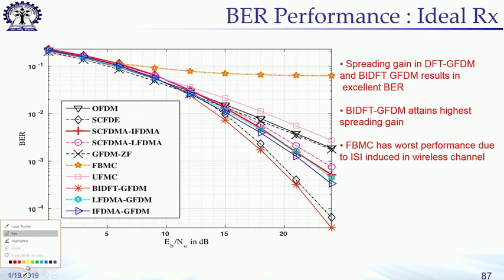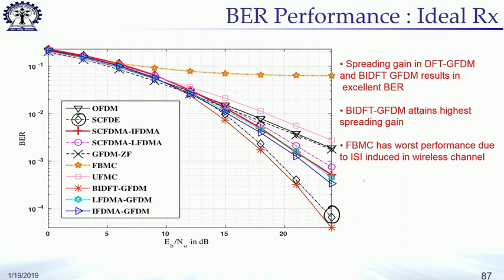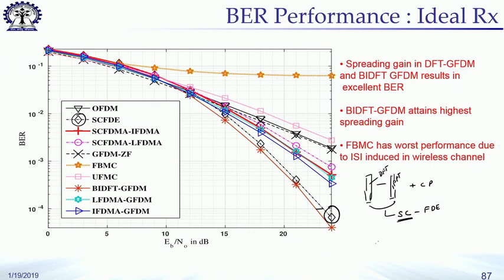Next we look at SCFDE — single carrier frequency domain equalization. This also performs pretty well because there is DFT spreading followed by OFDM which is IFFT; if both are the same size they cancel out and you result in single carrier. Adding a cyclic prefix allows frequency domain equalization while retaining single carrier characteristics. The extra SNR advantage over block-based schemes is because there is cyclic prefix per symbol rather than per block, reducing SNR loss.